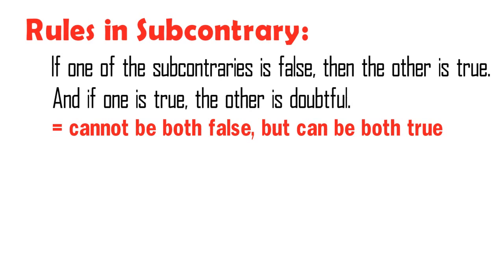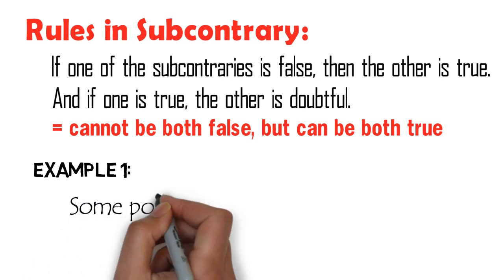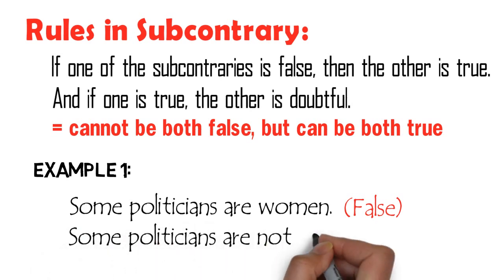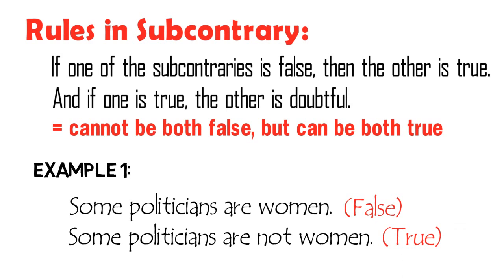Let us consider the examples earlier and assign truth values to them. If we assume that the proposition 'Some politicians are women' is false, then its subcontrary, 'Some politicians are not women,' is absolutely true. Of course, it is not true — therefore false — that some of the politicians are women, so it is absolutely true that some of the politicians are not women.